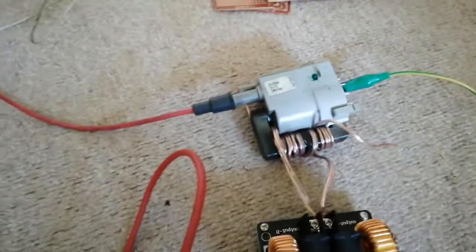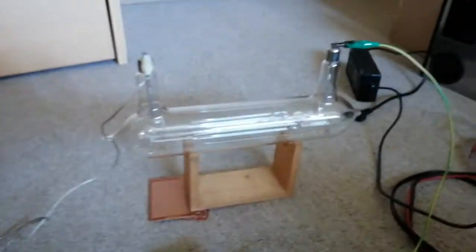This is a little Crookes tube I got a while ago. This is hooked up to a flyback transformer and to a ZVS driver.